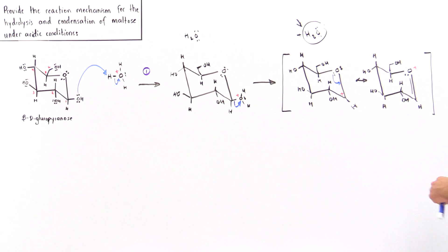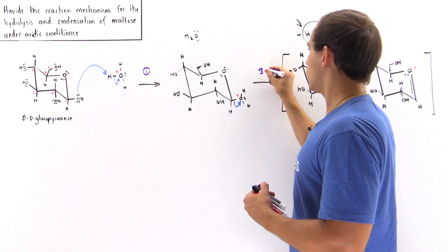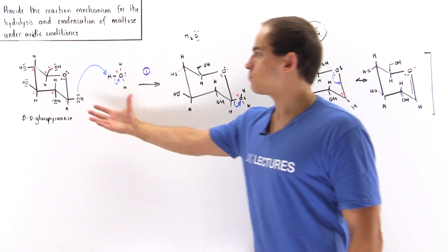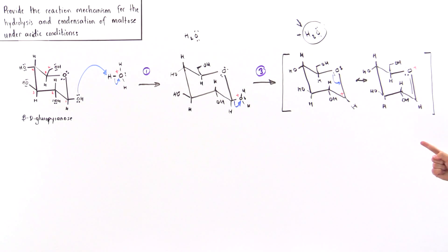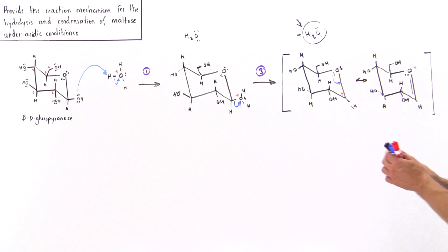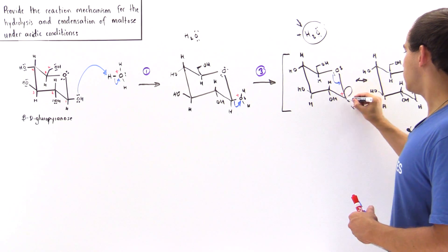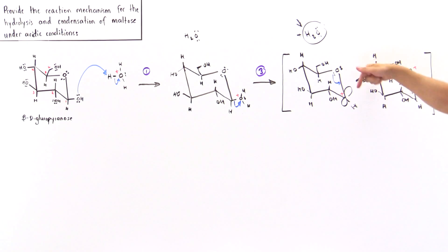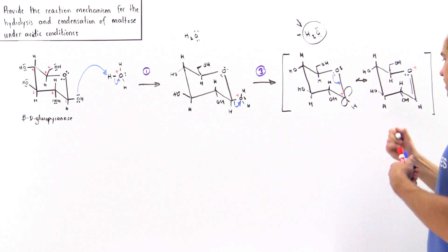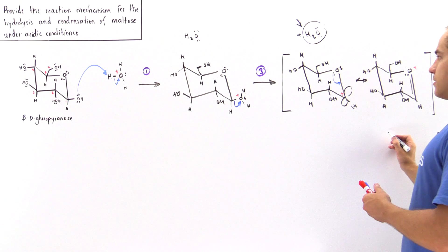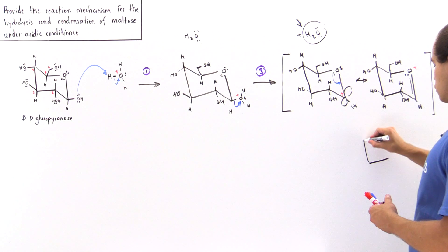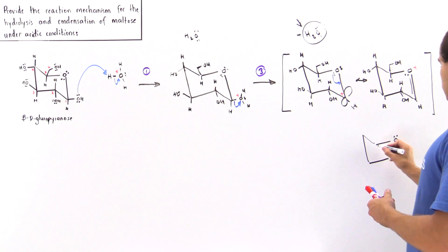This is step number two. In step three, the second glucose molecule approaches and acts as a nucleophile, attacking this electrophilic carbon. We can imagine an empty lobe on this carbon that will interact with a nucleophile — specifically, the hydroxyl group of the other sugar molecule.